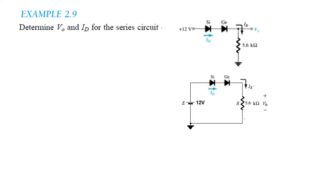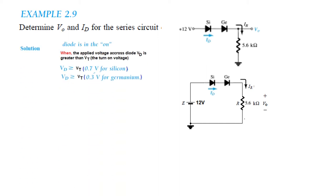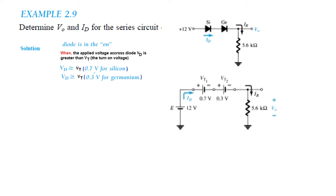Looking at the next example with a socket having two diodes — a silicon diode and a germanium diode. Silicon diode requires 0.7V potential to overcome, and germanium requires 0.3V. With a positive 12V supply, both diodes are ON. VD must be greater than VT for both: 0.7V for silicon here, and 0.3V for germanium here. We replace each diode with its equivalent battery voltage.